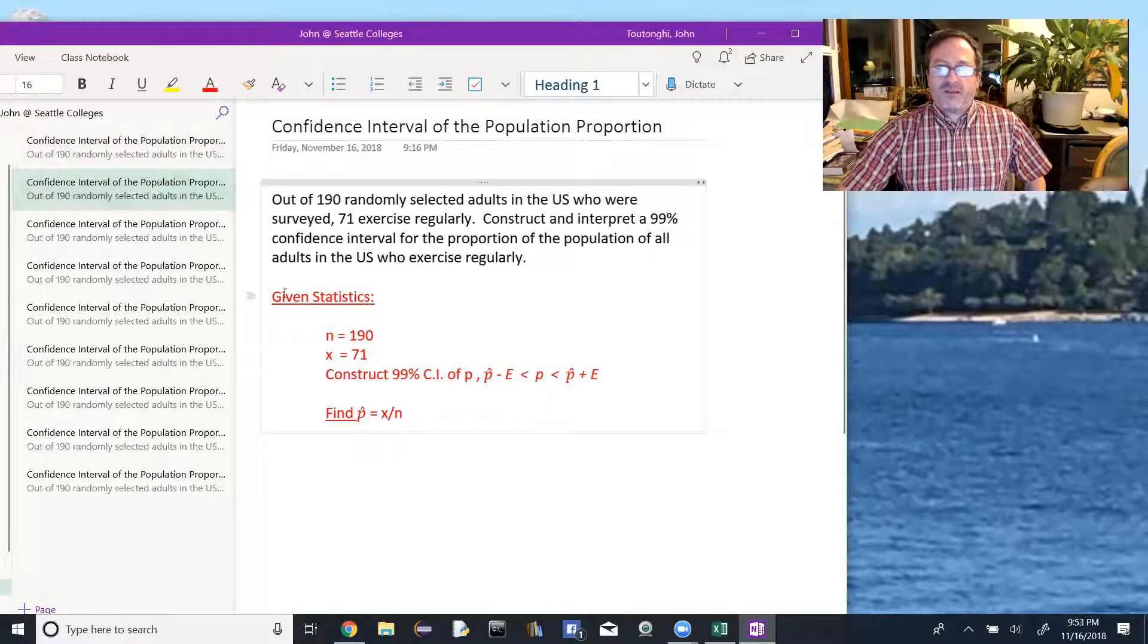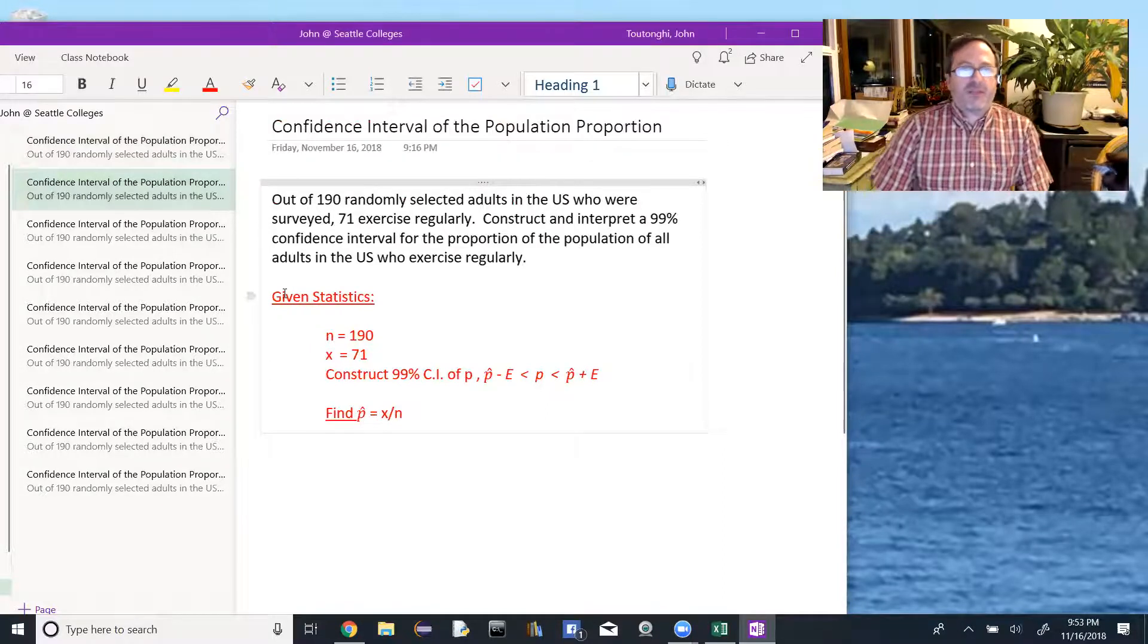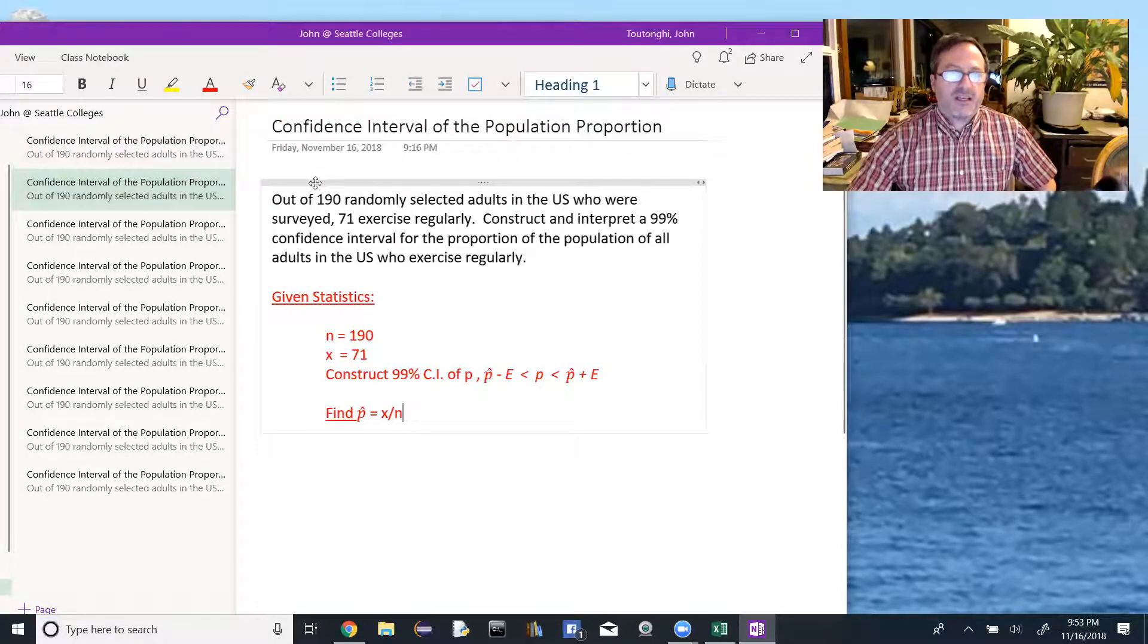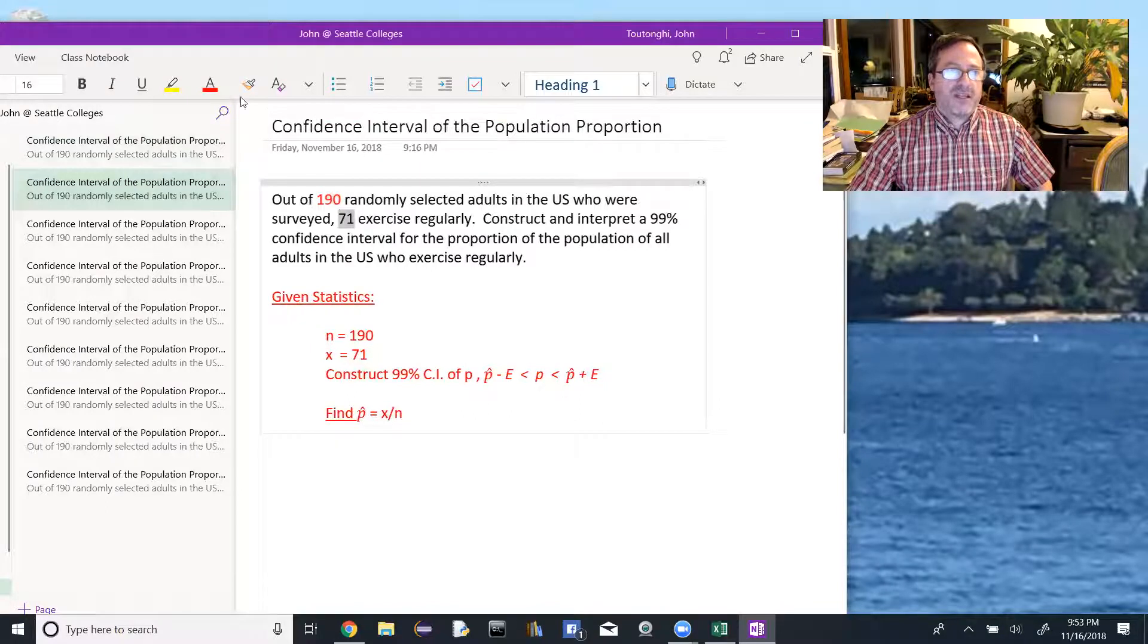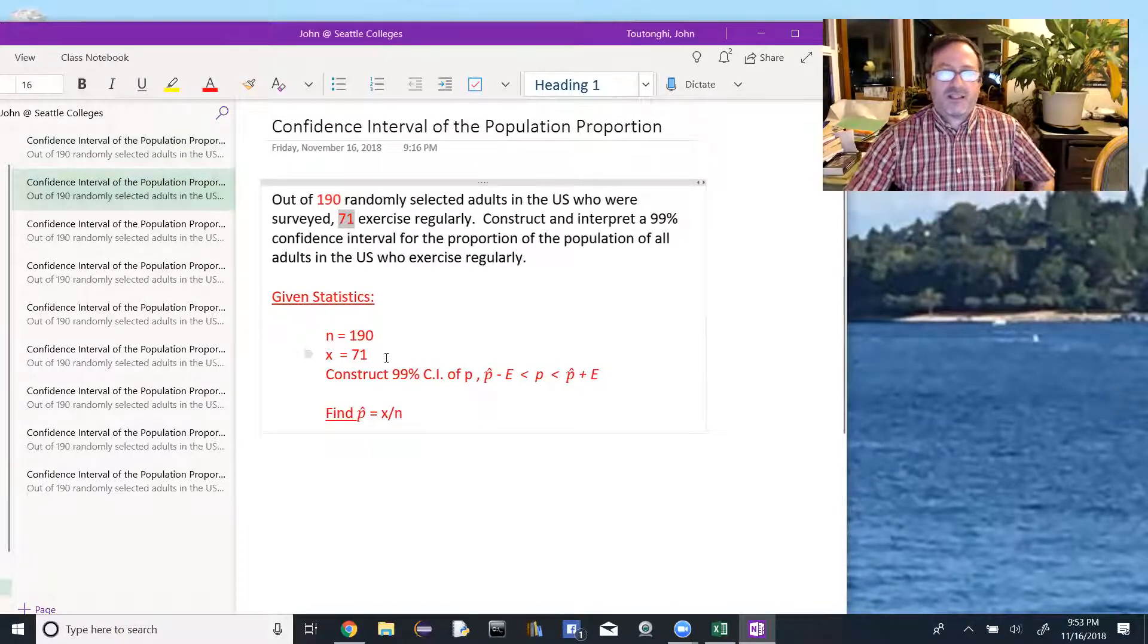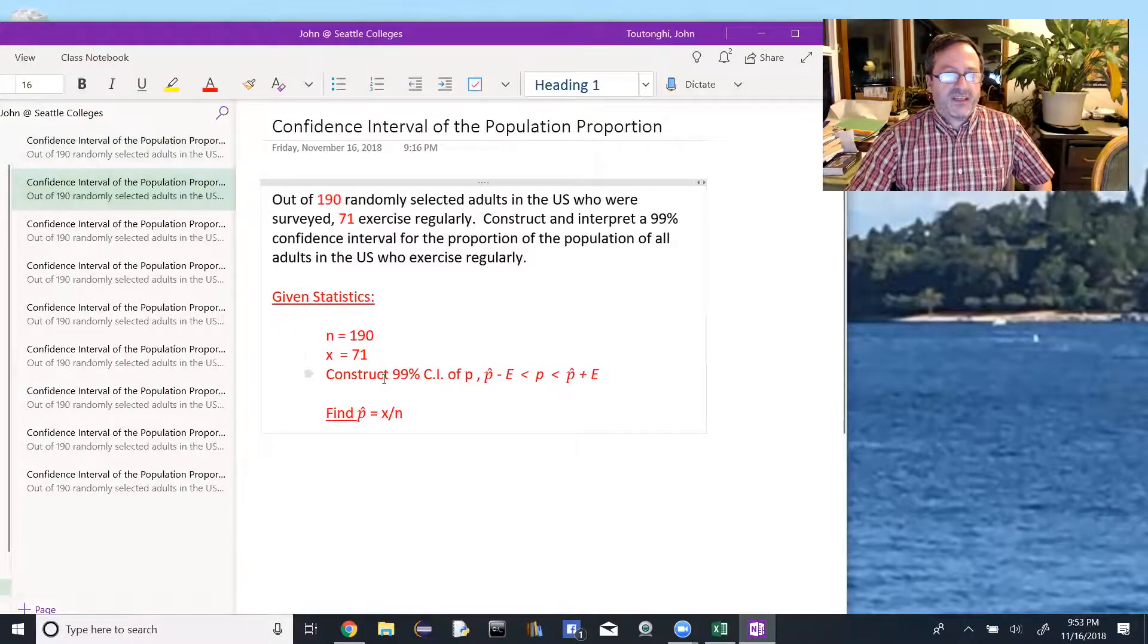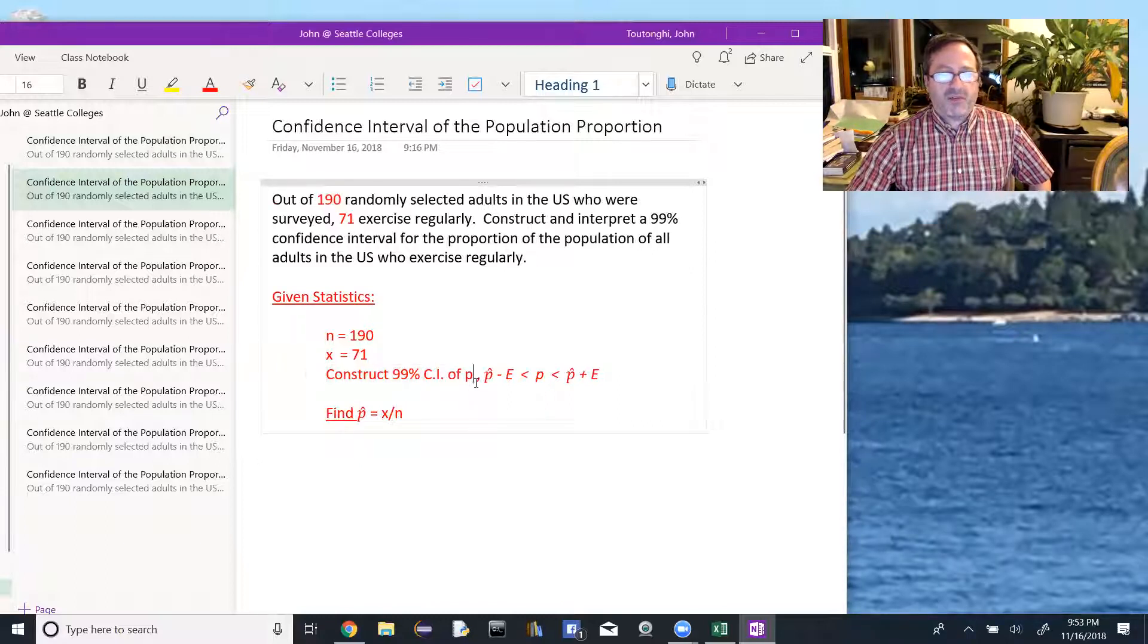We look at what our given statistics are in this problem. We're given that we have 190 people that were surveyed, so n equals 190. 71 of them, that's the successes. Success in this case is to exercise regularly, so there are 71 of them. It's asking us to construct a 99% confidence interval of the population proportion p.